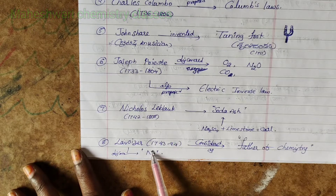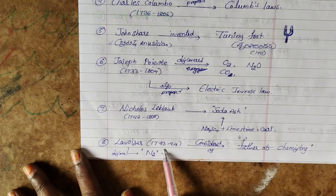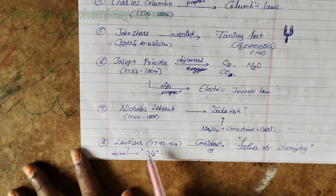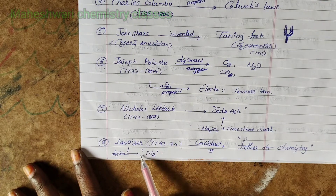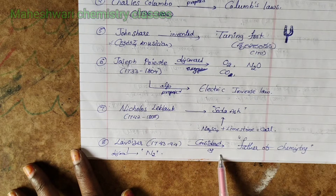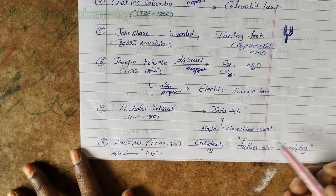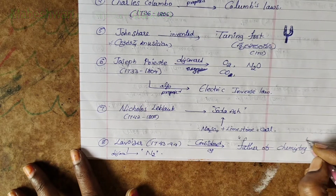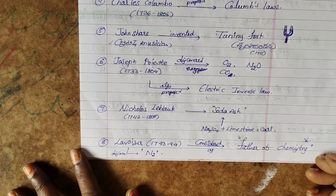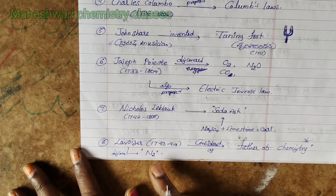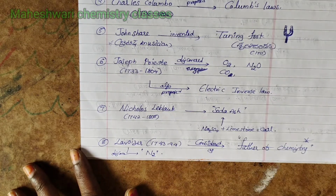Time duration period 1743 to 1794: Lavoisier discovered nitrogen gas and is considered the father of chemistry. Remember this important point.